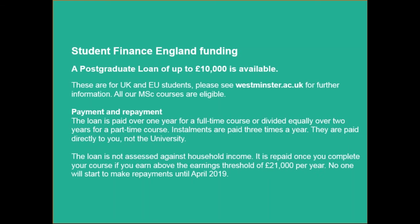Before we take a break, I just wanted to talk about the student finance postgraduate loans for home and EU students. This is a relatively new initiative. As it currently stands for this academic year, UK and EU students can apply for a loan of up to £10,000, which is paid over three different periods in the year and paid directly to you. You would have to arrange the payment to the university, but having a £10,000 loan is very useful towards paying for the master's. I'm including a link so you can look at how to apply.